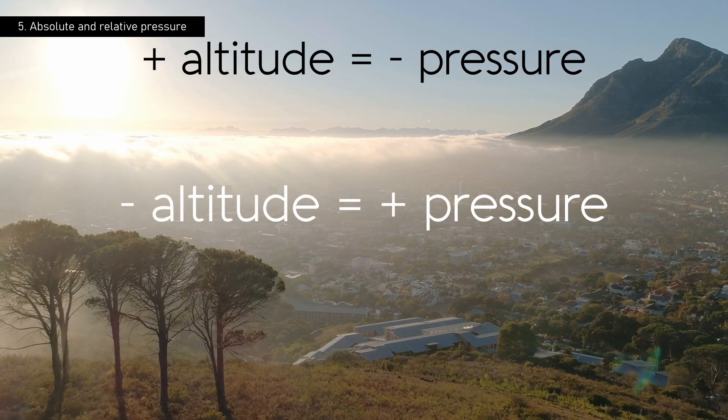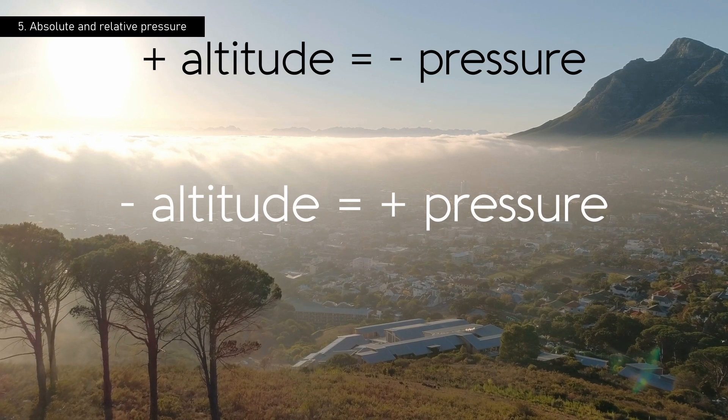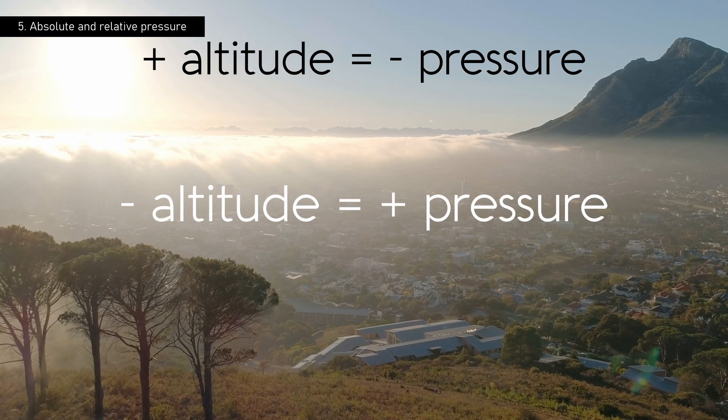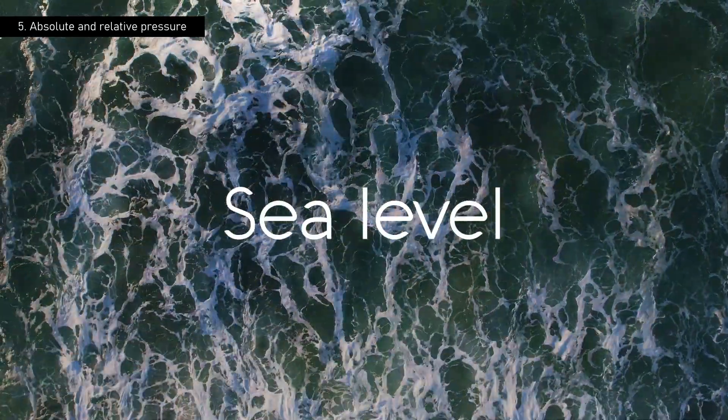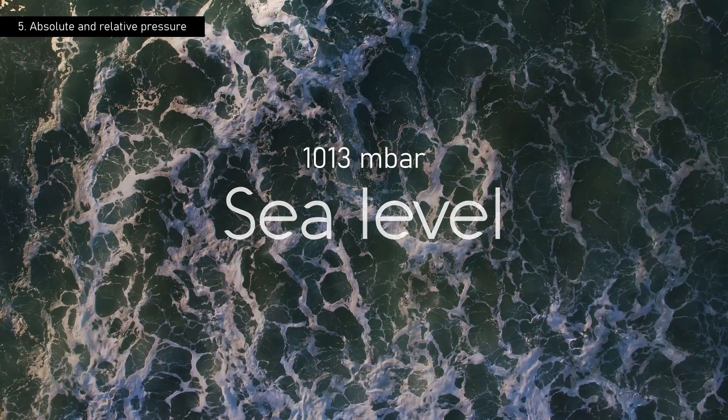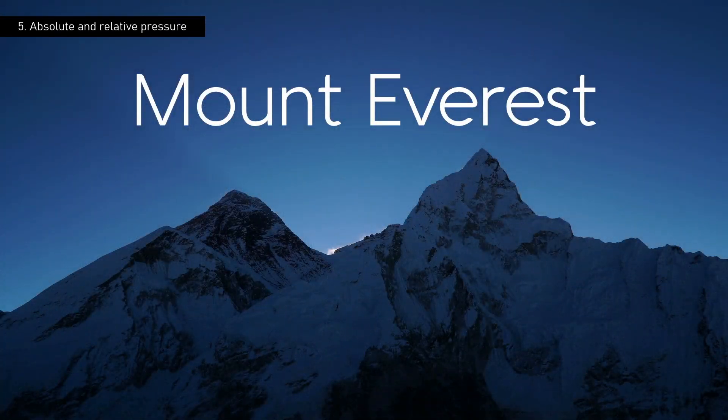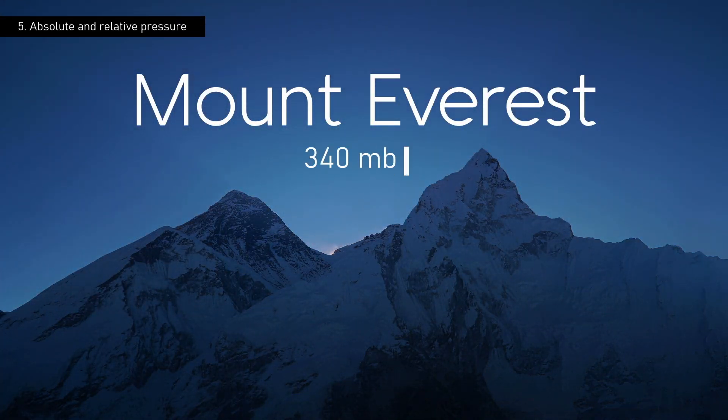Echoing Torricelli, we might say that at higher altitudes, there is less sea of air above us. For example, at sea level, the absolute pressure is approximately 1,013 millibars, whereas at the summit of Mount Everest, the pressure is only about 340 millibars.